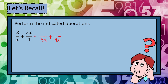4x divided by x is 4 times 2, that is 8. 4x divided by 4 is equal to x multiplied to 3x, that is 3x squared. Next is we're going to add the numerator. Since these two are not similar terms, we will just write them as one. We have 8 plus 3x squared over — copy the denominator — which is 4x.